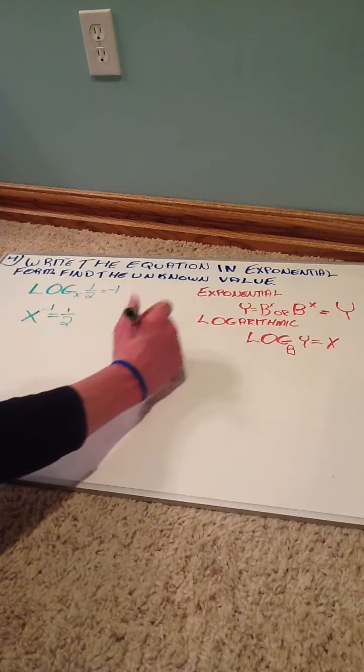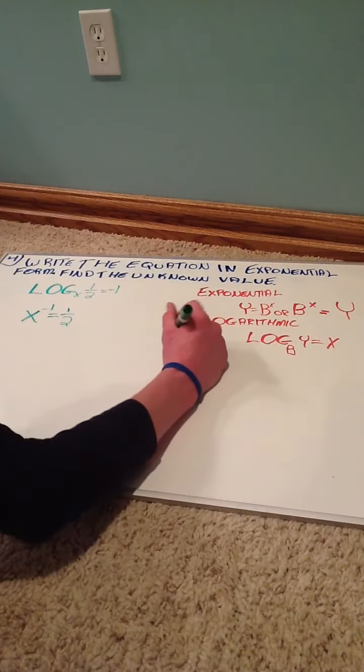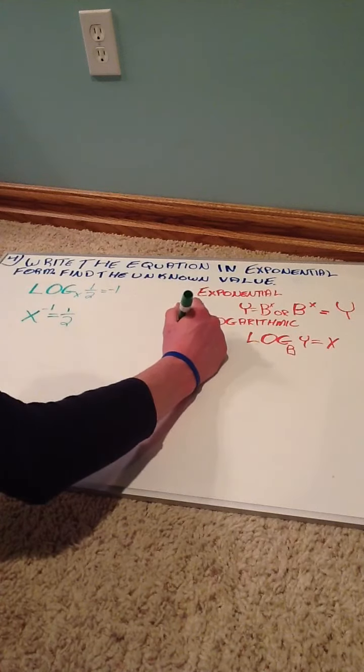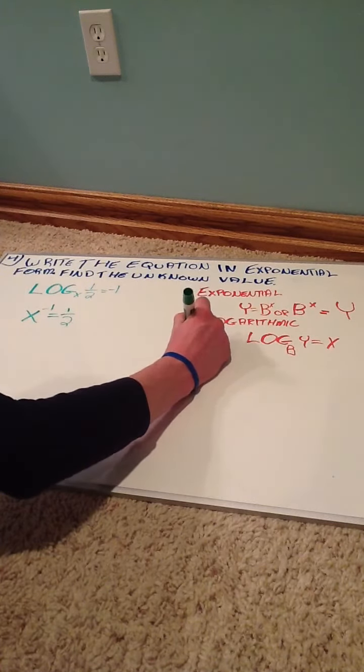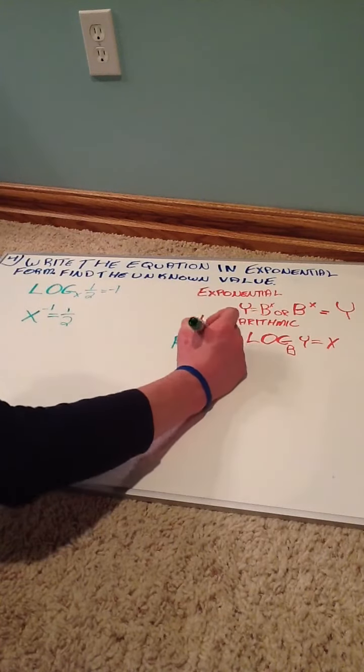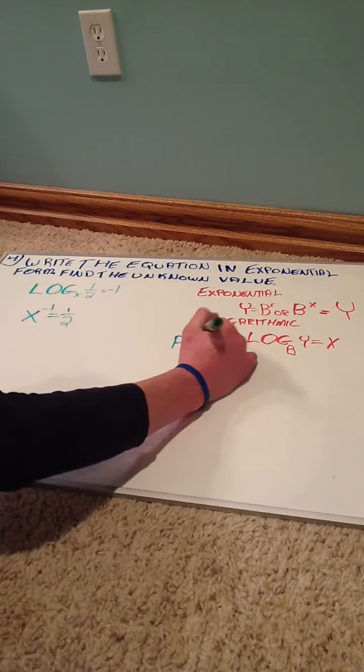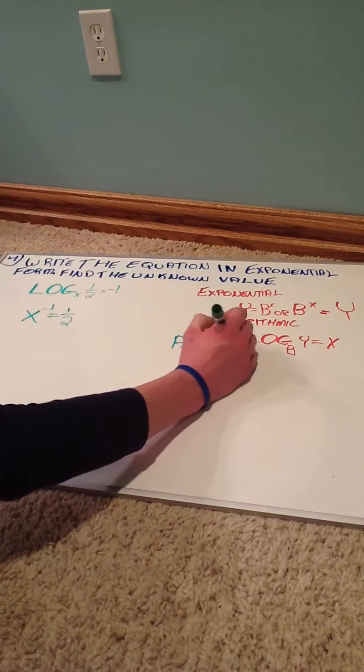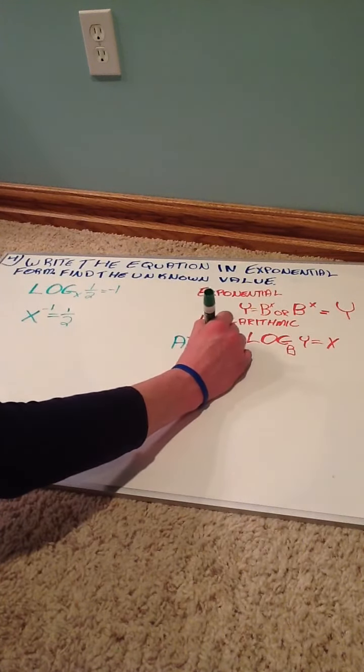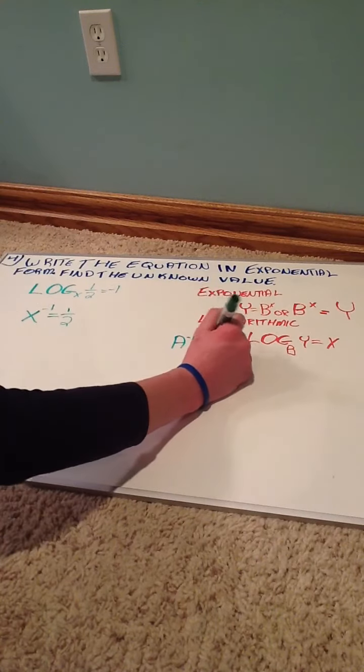So now, if we take a quick look at our exponents and our exponent rules, if we have a to the negative n, which is our negative exponent, that's the same as one over a to the n, and then it just gets rid of the negative value.